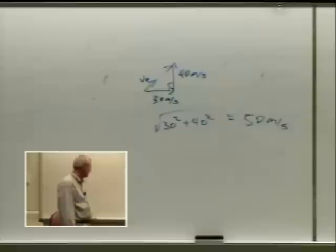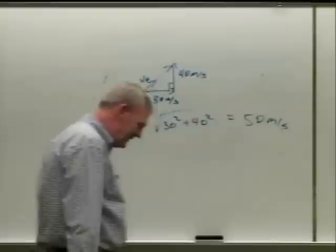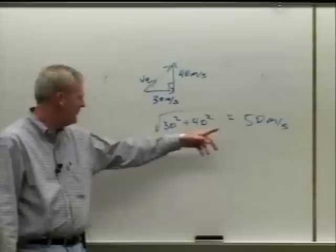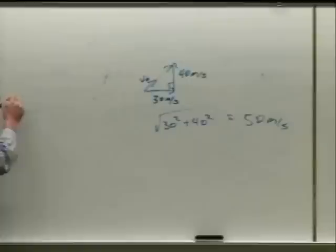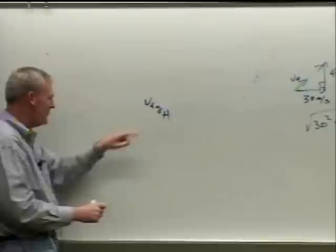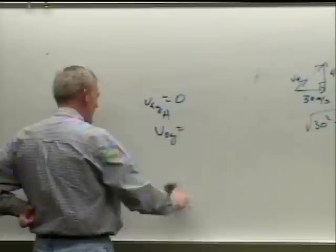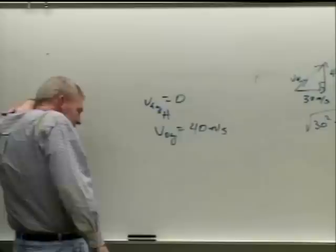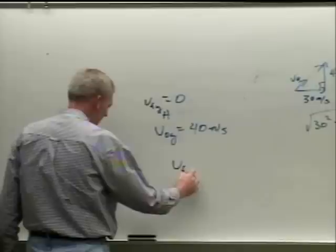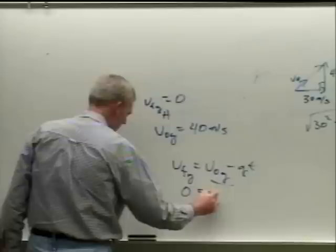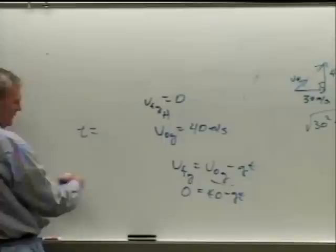The next question asked how high this thing goes. People correctly identified that the final y-velocity at maximum height equals zero, but then incorrectly used 50 — no, v-naught-y is 40. Using v-fy equals v-naught-y minus g times t: 0 equals 40 minus g times t, so t comes out to about 4.1 seconds to reach maximum height.